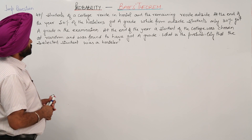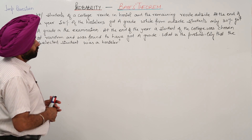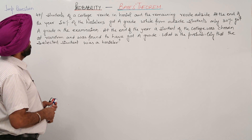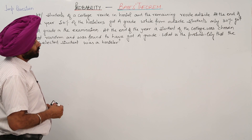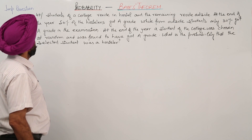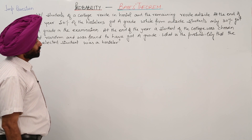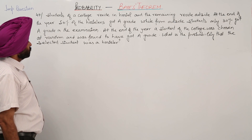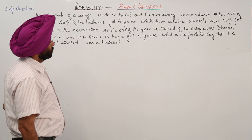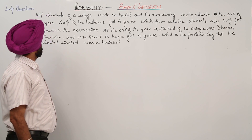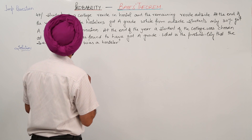40% of students of a college reside in a hostel and the remaining reside outside. At the end of the year, 50% of the hostlers got grade A, while from outside students only 30% got grade A in the examination. A student of the college was chosen at random and was found to have got grade A. What is the probability that the selected student was a hostler?